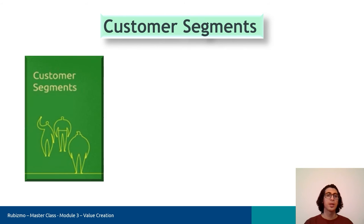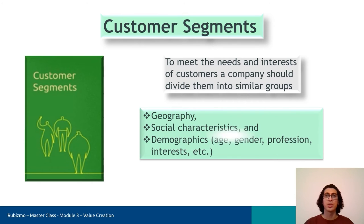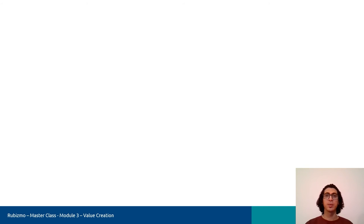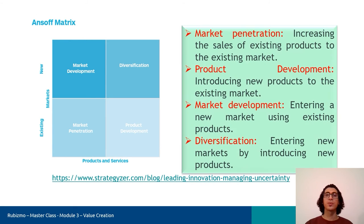Let me start with the customer segments. Customer segments is the first and most important structure of the business model canvas. To meet the needs and interests of customers, a company should be able to divide them into similar groups. Customers can be divided into different sections in terms of geography, social characteristics, and demographics. The term segment normally relates to the product-market matrix. Putting products or services on one axis and possible target groups on the other, a company can choose different strategies.